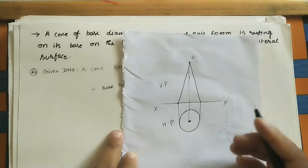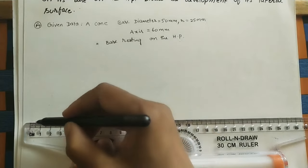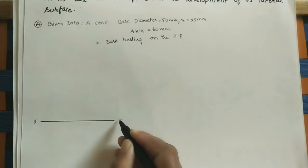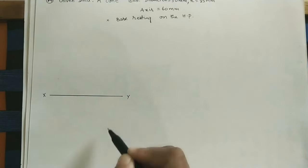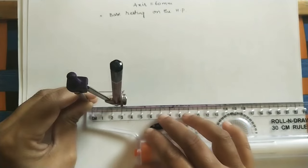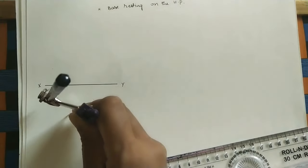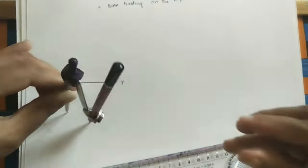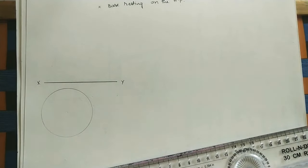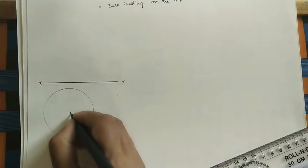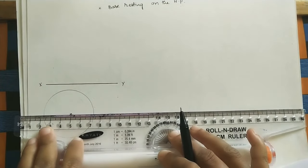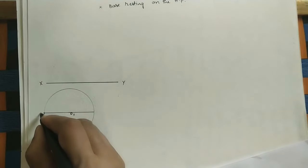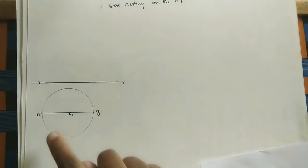Now we will do the projections, then the development of the surface. Draw the XY line of some length — mark X and Y. After some gap, draw the circle for the top view. The radius is 2.5 centimeters, so using a compass take one point as center and draw the circle. Mark the center as O1 and draw the horizontal diameter with endpoints A and G.